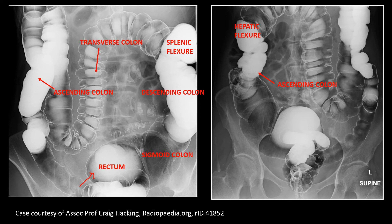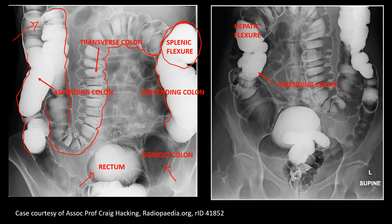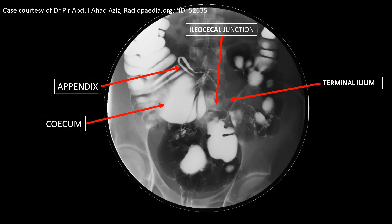Then we see the sigmoid colon as a dilated structure, followed by the descending colon, the splenic flexure, the transverse colon, the hepatic flexure, and the ascending colon. This image is taken by the double contrast method. In the next image, we can identify the cecum, which is the lowermost part of the ascending colon. Focusing on the cecal region, we can see the dilated cecum, and we can also identify the appendix, the ileocecal junction, and the terminal part of the ileum.